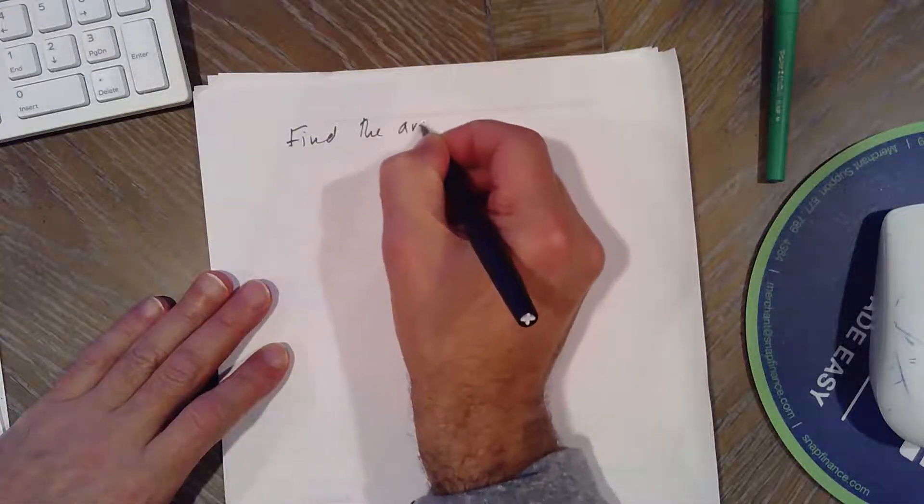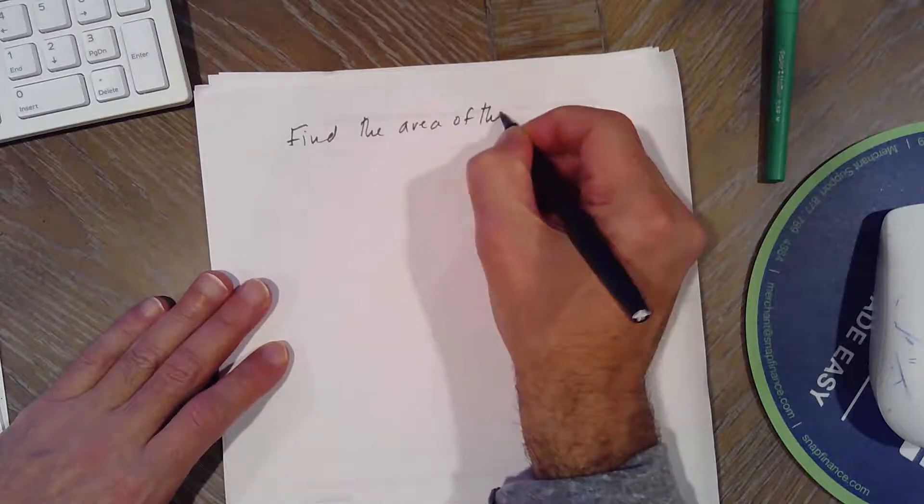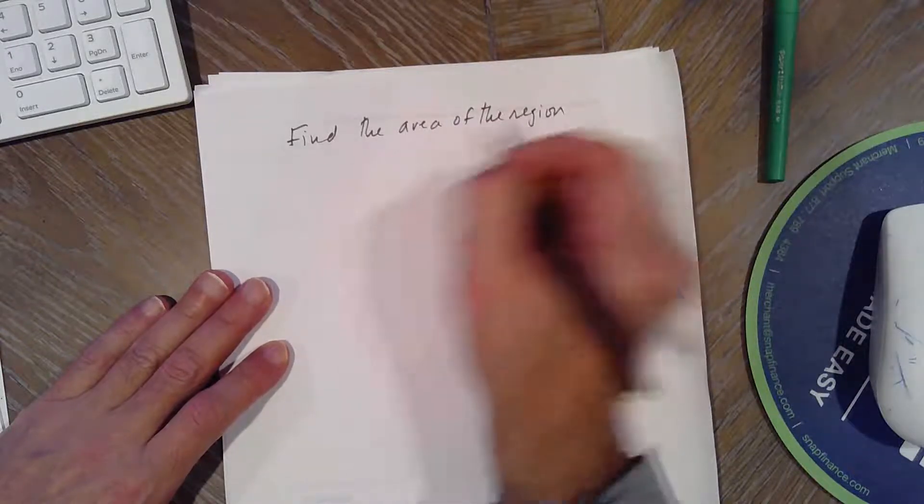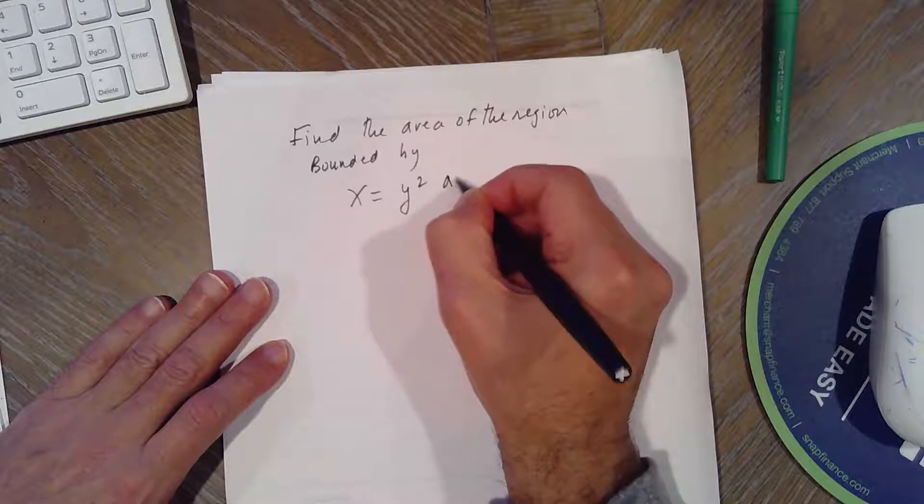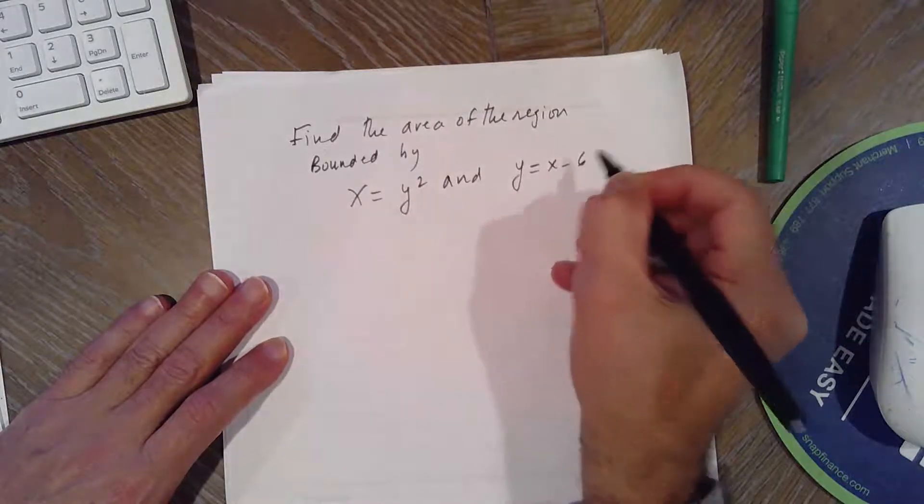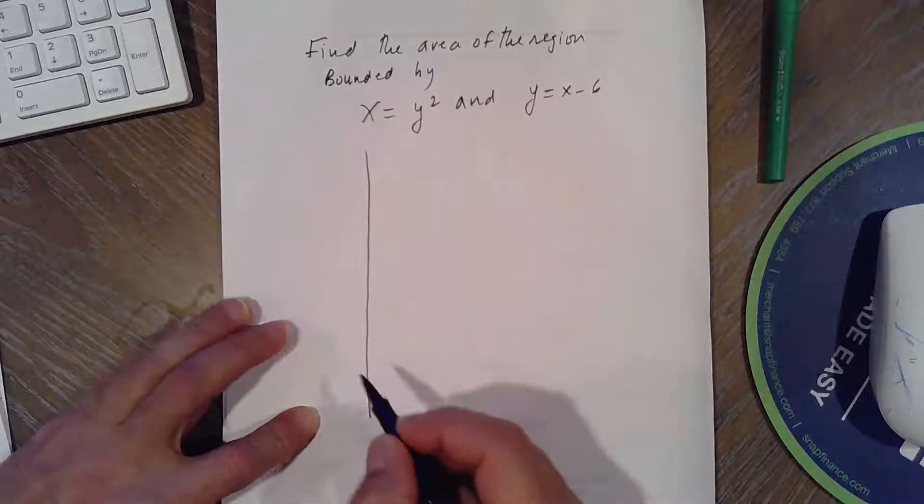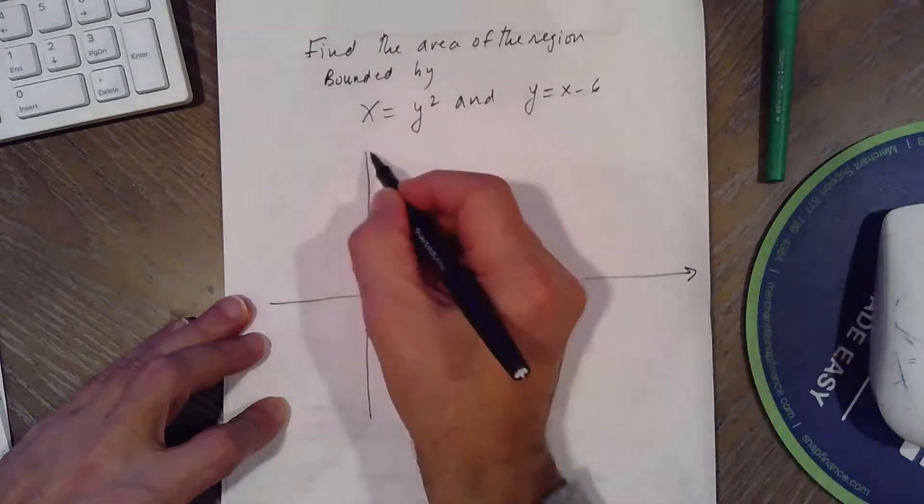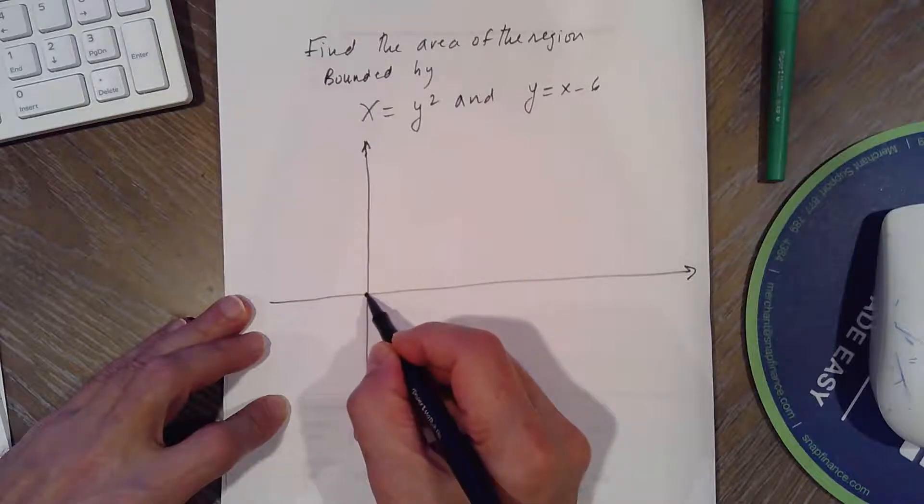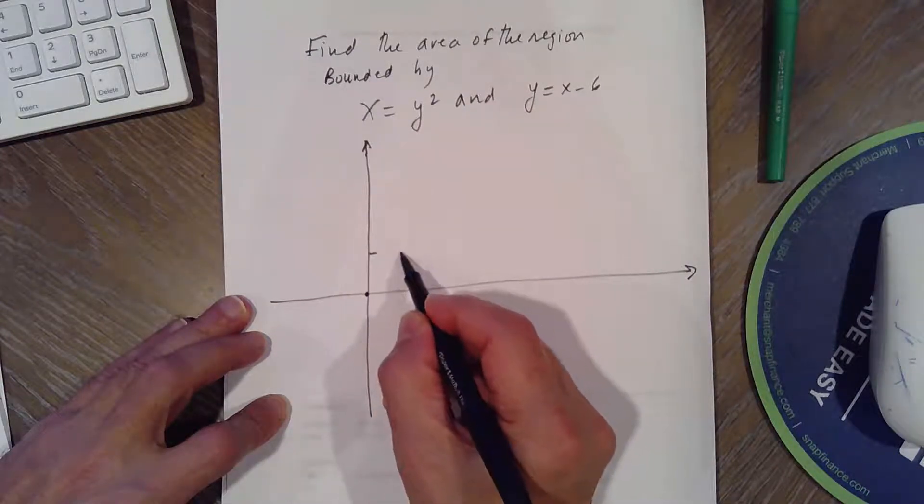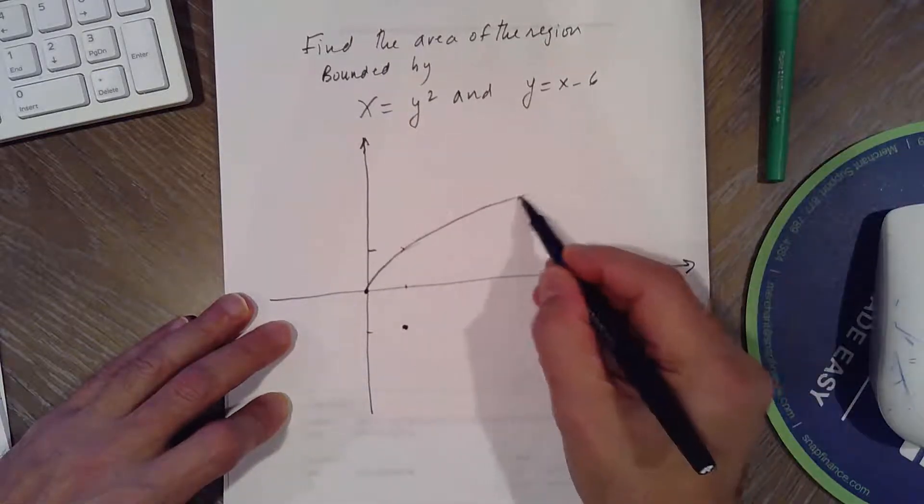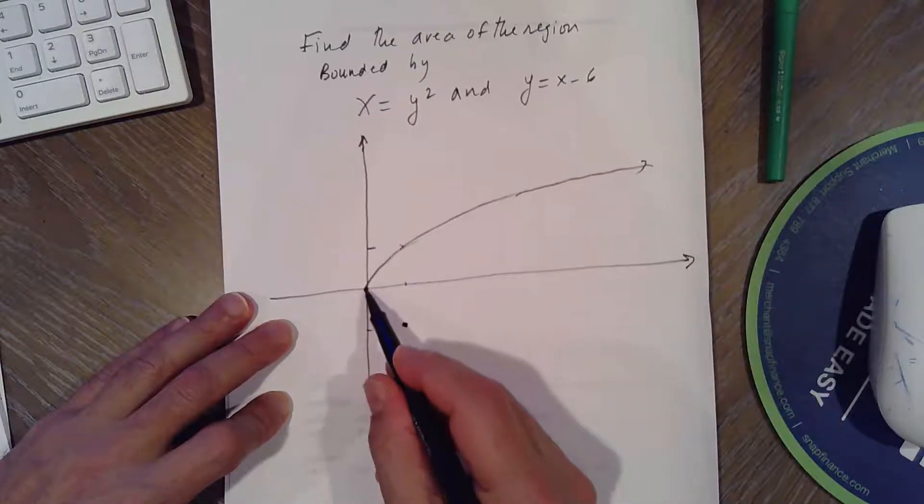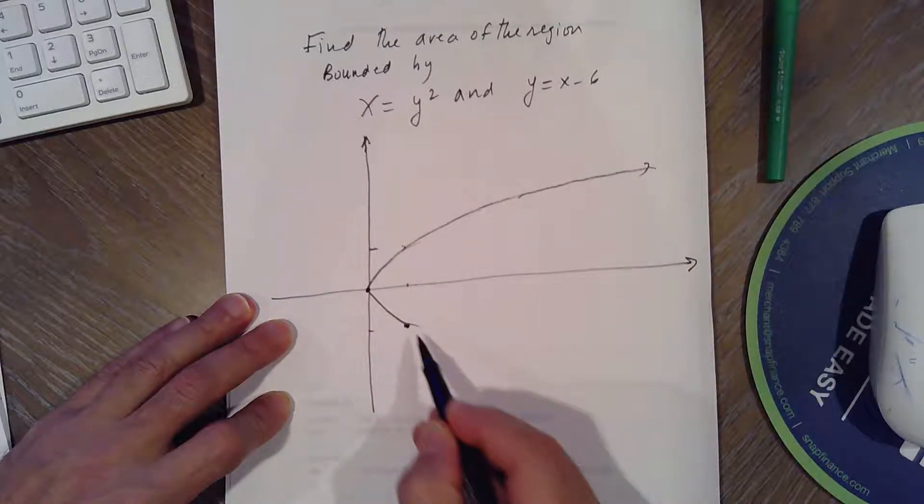I'm going to do this one. Find the area of the region bounded by X equals Y squared and Y equals X minus 6. If we graph these, X equals Y squared. So at 0, it's 0. When Y is 1, X is 1. When Y is negative 1, X is 1. So it's going to go open sideways. Plotting points 2, 3, 4, 5, 6, 7, 8, 9.